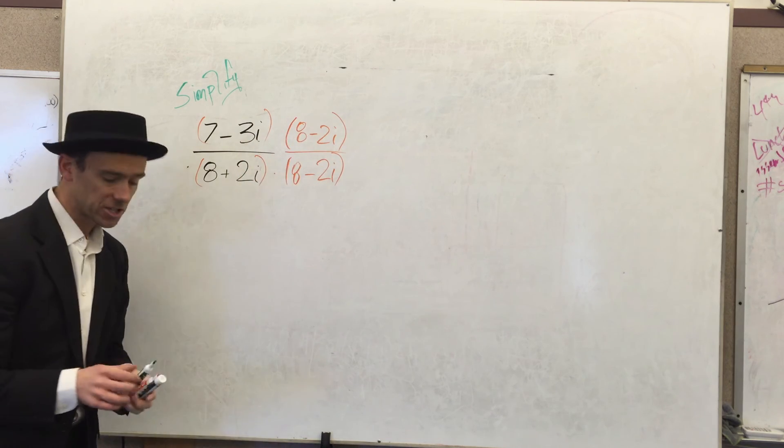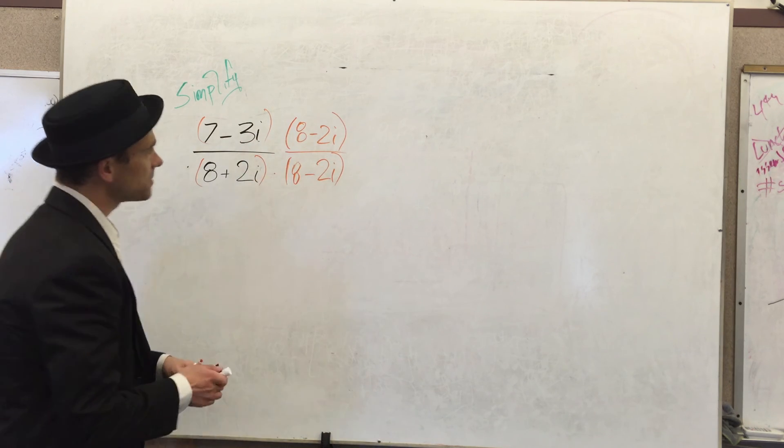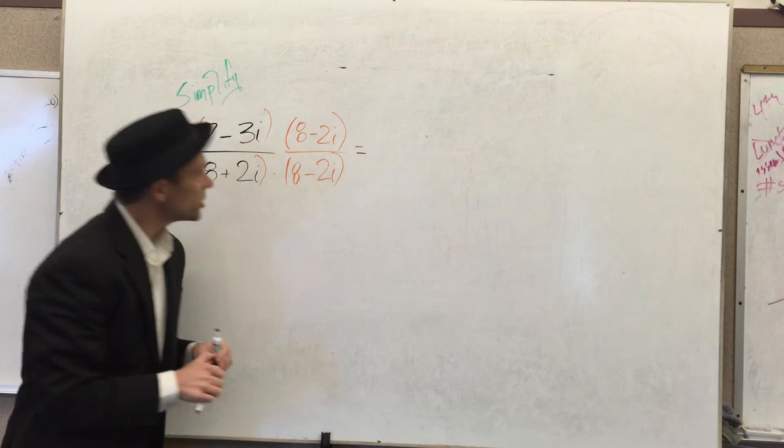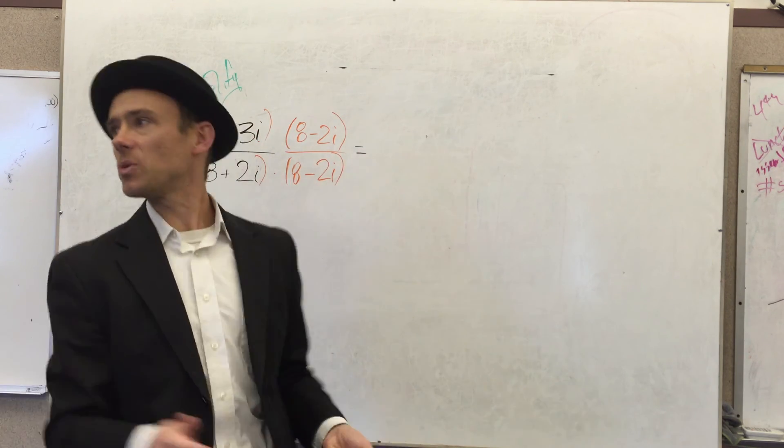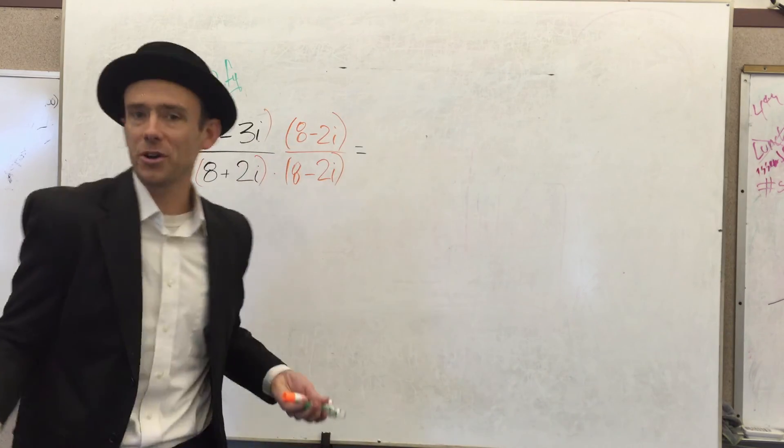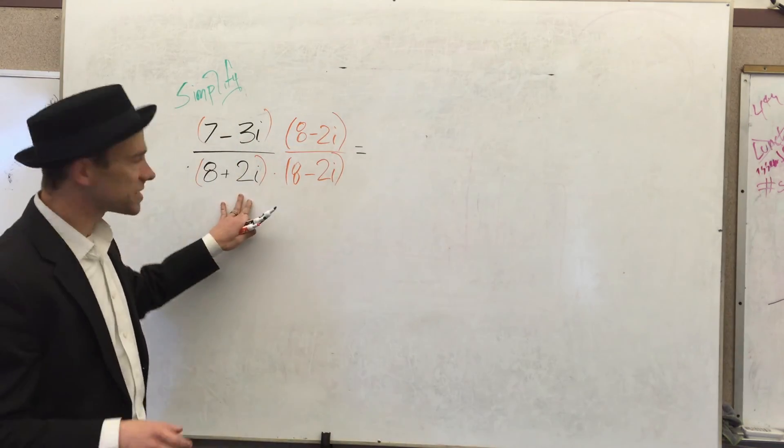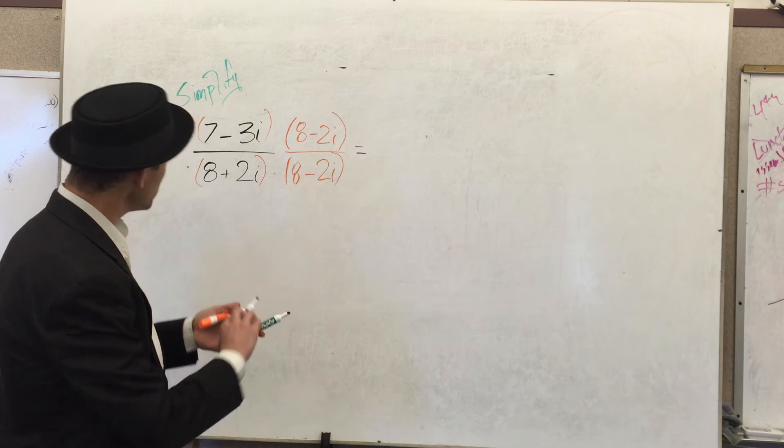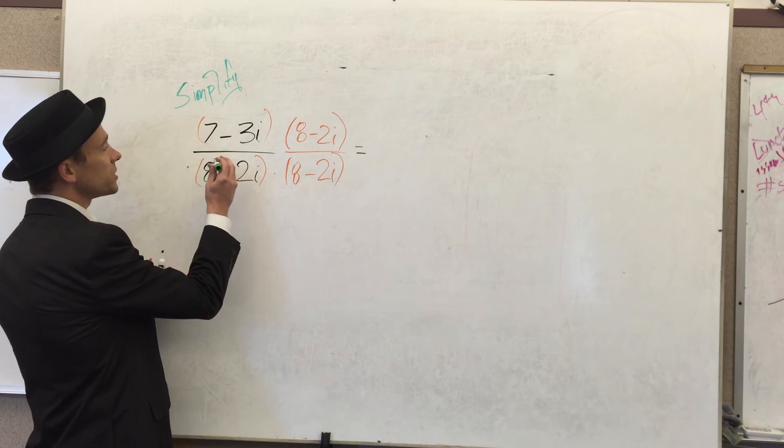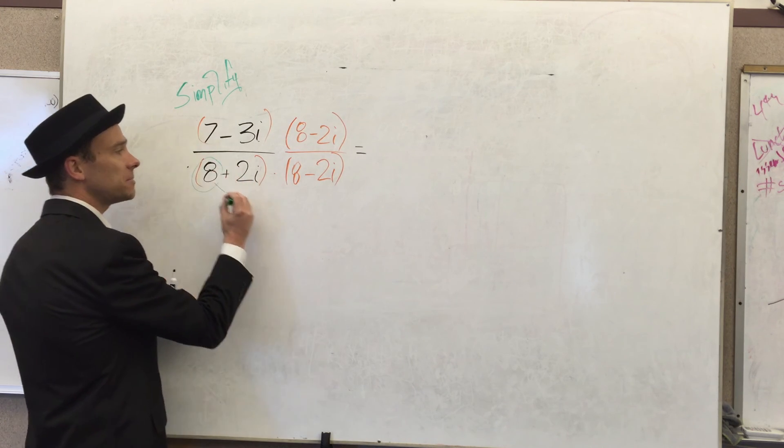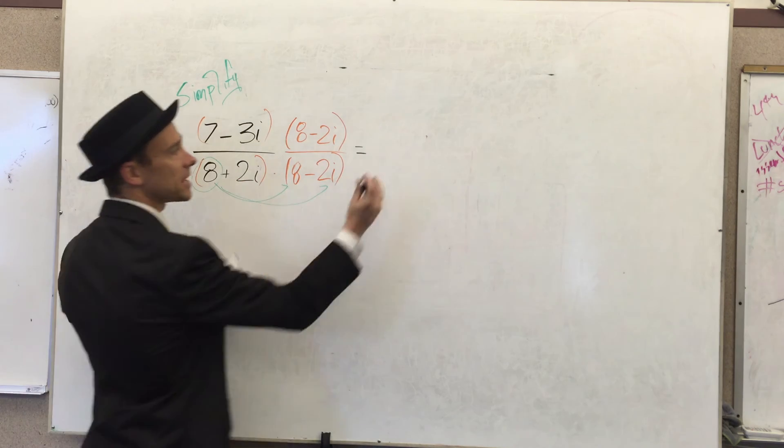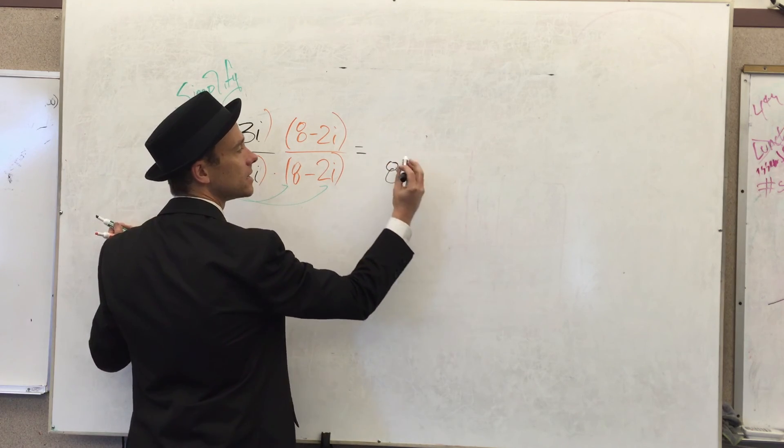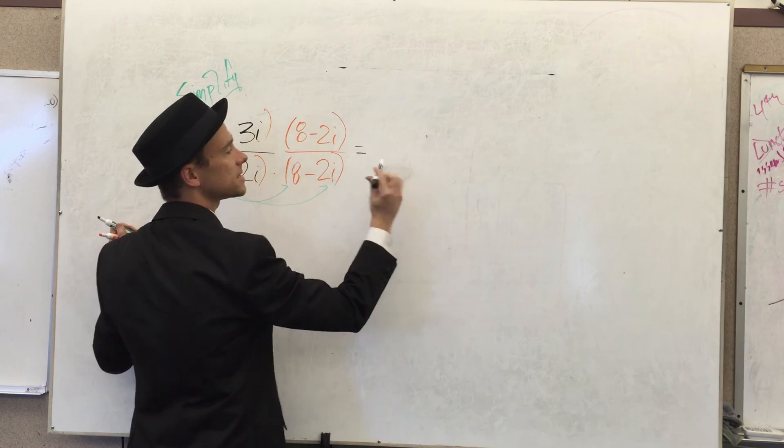So really these are two binomials, so I'm going to use what we call the FOIL method. FOIL is essentially a double distribution. Okay, so for the FOIL method what you do is you take this first term and you multiply it like that. So 8 times 8 is 8 squared, so I'll just go right to 64.